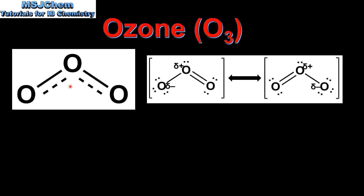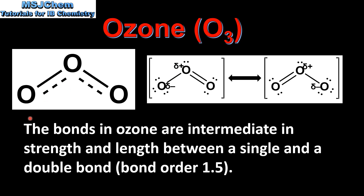If we look at the resonance structure, the two bonds in ozone are intermediate in strength and length between a single and a double bond. They have a bond order of 1.5.